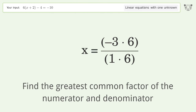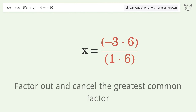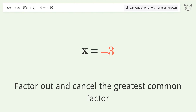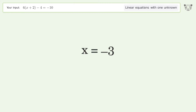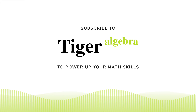Find the greatest common factor of the numerator and denominator. Factor out and cancel the greatest common factor. And so the final result is x equals negative 3.